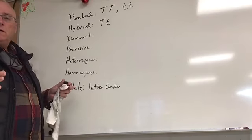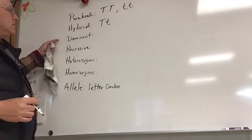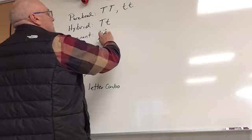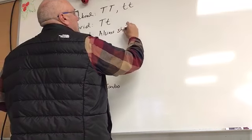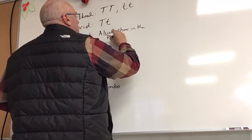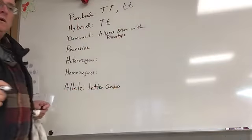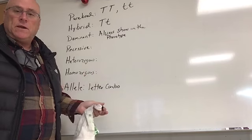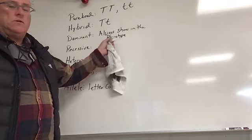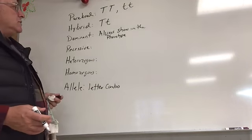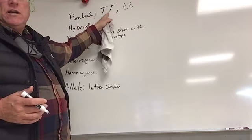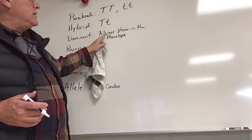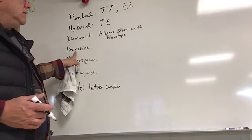When it comes to dominant and recessive, the dominant trait always shows in the phenotype. Remember, genotype is the letters. Phenotype — like photograph — is what you can see and describe. So dominant always shows: anytime you see a gene combination that has a capital letter in it, whatever that capital letter codes for is the phenotype that's going to show up in the offspring.